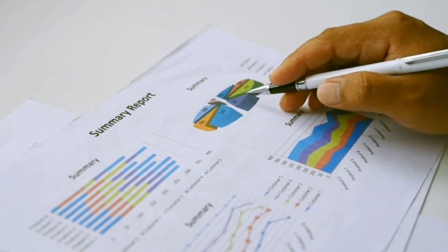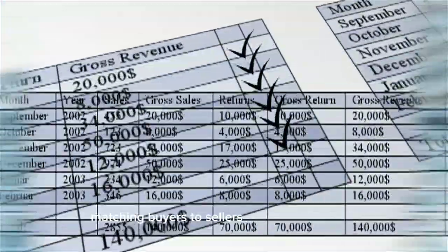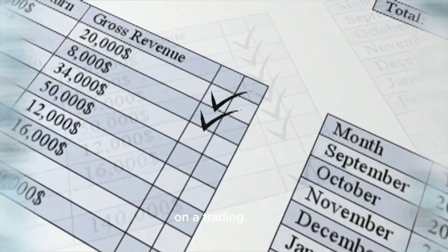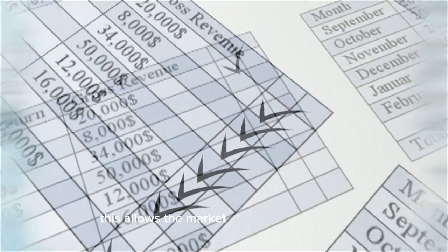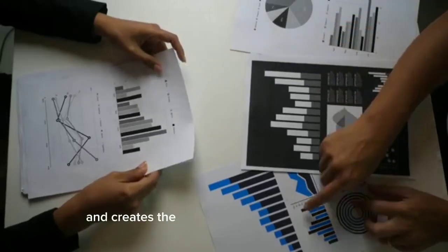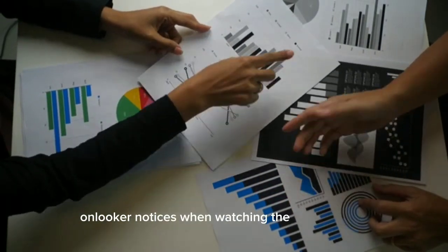At the start of stock markets, matching buyers to sellers was done manually on a trading floor. Now it's mostly done automatically by trading systems. This allows the market to move much faster and creates the breakneck pace that any casual onlooker notices when watching the stock market.